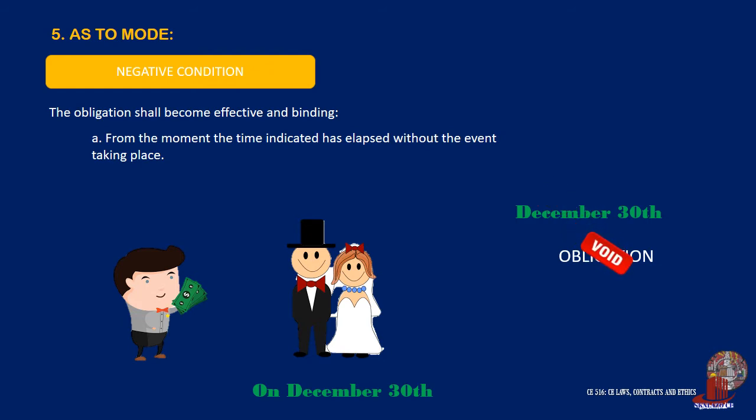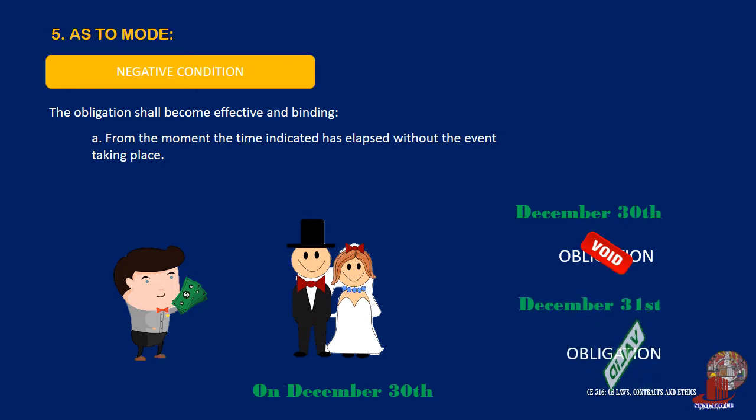Rob is liable to Bert if on December 30th Bert is not married to Charisse, and also if Bert marries Charisse after December 30th. In the latter case, the condition of not marrying Charisse is fulfilled upon the expiration of the time indicated, which is December 30th.